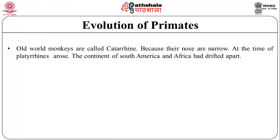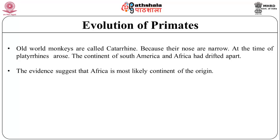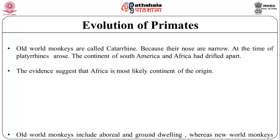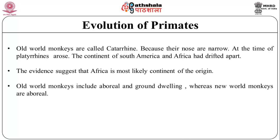Old World monkeys are called catarrhines because their noses are narrow. At the time platyrrhines arose, the continents of South America and Africa had drifted apart. New World monkeys appeared for the first time about 30 million years ago. The evidence suggests that Africa is most likely the continent of origin. It is believed that due to reproductive isolation, New World and Old World monkeys underwent separate adaptive radiations over millions of years. Old World monkeys include arboreal and ground-dwelling species, whereas New World monkeys are arboreal.